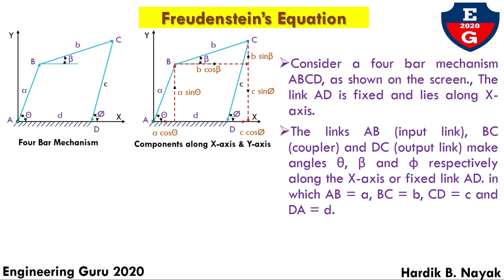Similarly, vector CD can be resolved into components. The horizontal component of CD will be C cos phi and the vertical component will be C sin phi. For the equilibrium of the mechanism, the sum of the components along the X-axis and along the Y-axis must be equal to zero.